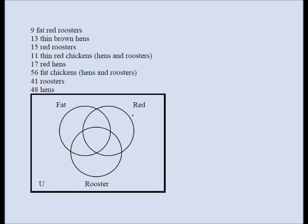You have to understand that we're picking one from each pair. The circle represents fat chickens — everything outside represents thin chickens. The circle represents red chickens — everything outside represents brown chickens. The circle represents roosters — everything outside represents hens.